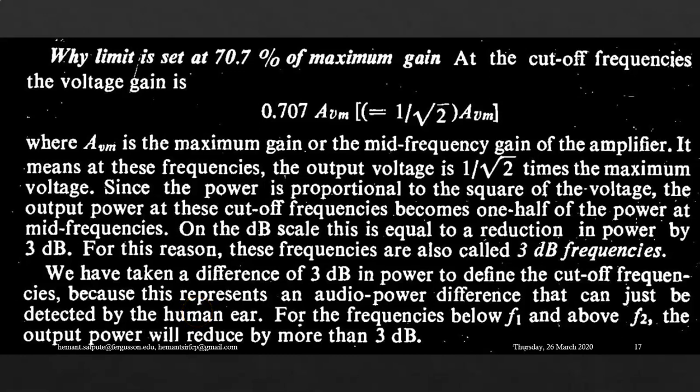Why is the limit set at 70.7% of maximum gain at the cutoff frequencies? At cutoff frequencies, the voltage gain is 0.707 times Avm, which equals 1 by root 2 times Avm, where Avm is the maximum gain or the mid-frequency gain of the amplifier.